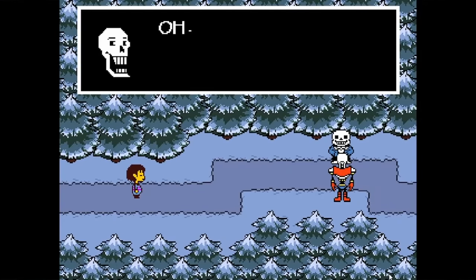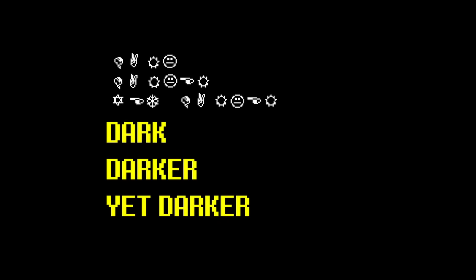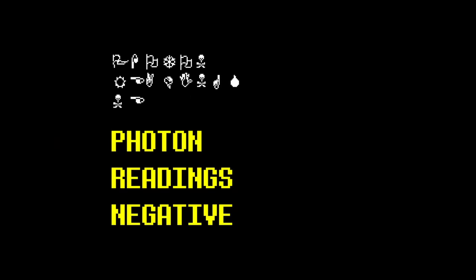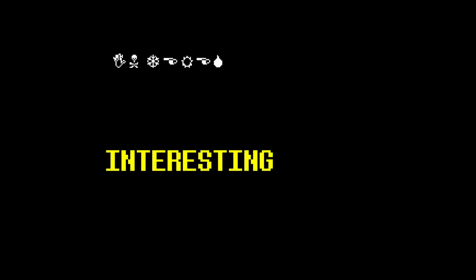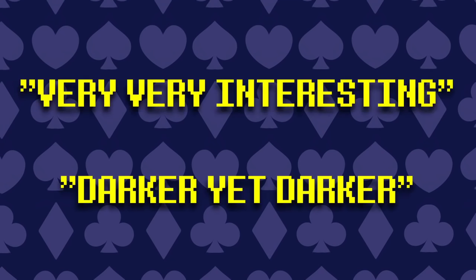It's also entirely possible that Gaster is just the Aster font with a G tacked on — he gets two. Entry Number 17, once translated, reads what seems to be the middle of a conversation about an experiment: 'Dark, darker, yet darker. The darkness keeps growing, the shadows cutting deeper, photon reading is negative. This next experiment seems very, very interesting. What do you two think?' Remember the phrases 'very, very interesting' and 'darker, yet darker' — they are important. Please also remember the very distinct sound that plays while Entry 17 is being read.